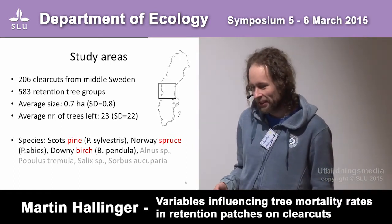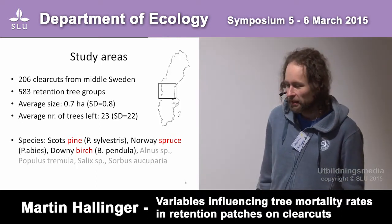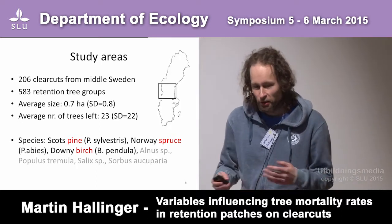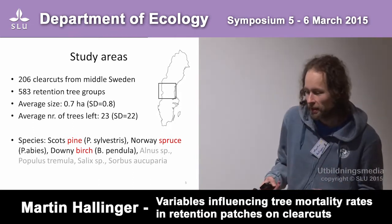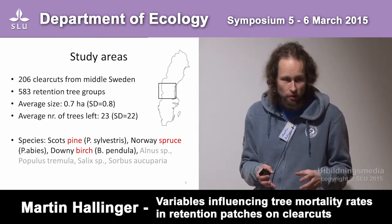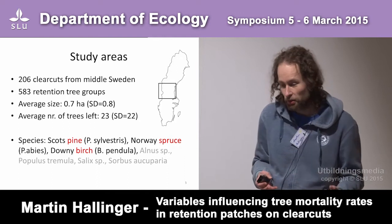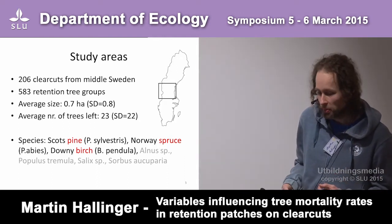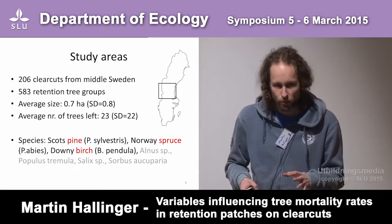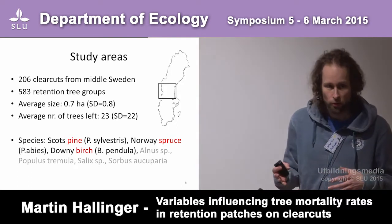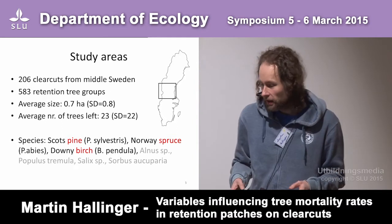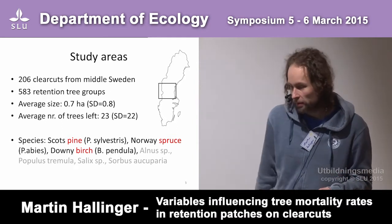What we did is we went to middle Sweden and looked at a lot of retention trees in a lot of clear cuts that were comparatively small, about 23 trees per retention tree group. We mainly looked at pine, spruce, and birch trees, although there were a few other broad-leafed species in the study plots present.